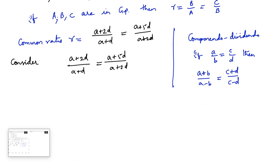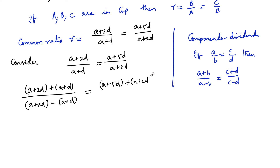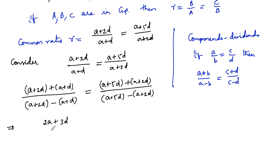Applying componendo-dividendo: [(a + 2d) + (a + d)] / [(a + 2d) − (a + d)] = [(a + 5d) + (a + 2d)] / [(a + 5d) − (a + 2d)]. Simplifying: (2a + 3d)/d = (2a + 7d)/3d.